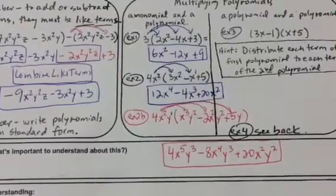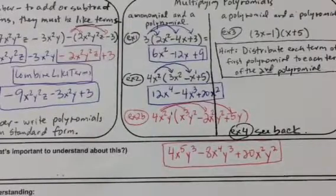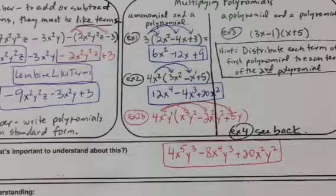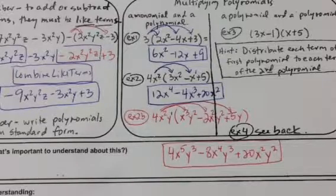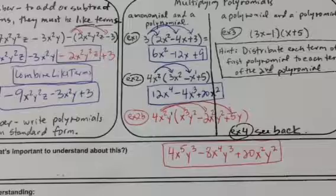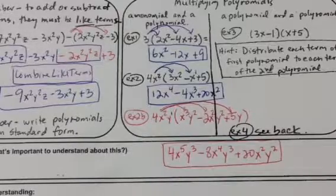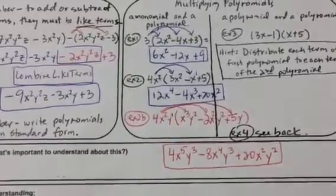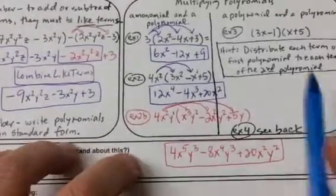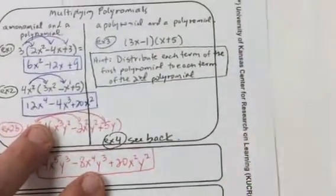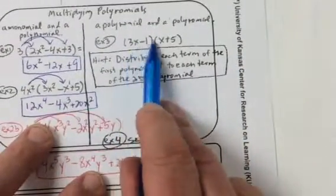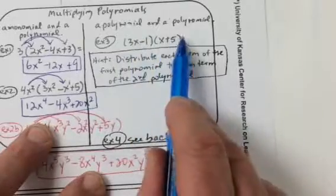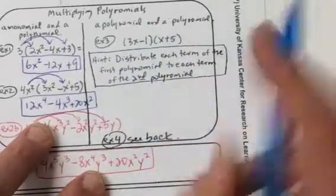Now when your parents think of Algebra 1, this is one of the two things that they think about. The other main thing that they think about we'll do next week, and that is when we start factoring. But for today, let's talk about just using the distributive property when we have polynomials. So, we distribute each term of the first polynomial to each term of the second polynomial.